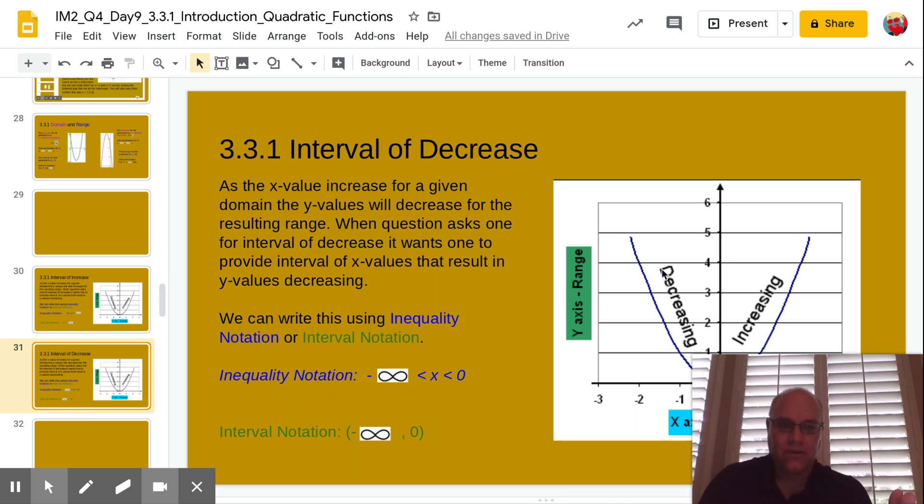So for inequality notation here, x is greater than negative infinity and x is less than zero. Right, that is your interval from zero to negative infinity over here on the left. Negative infinity. All right, again you could just write this as x is less than zero, would be the same thing. I'm trying to show you the bottom end and the top end of it so you see the interval.